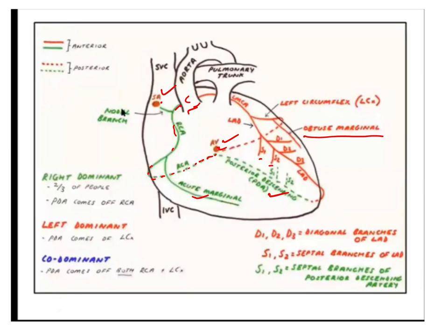The septum is supplied by both the right coronary artery and the left coronary artery. The left coronary artery supplies the septum through its left anterior descending artery. If there is blockage in the right coronary artery — specifically to the SA node artery or AV node artery — blockage to the SA node artery will cause heart block.